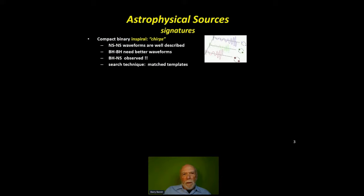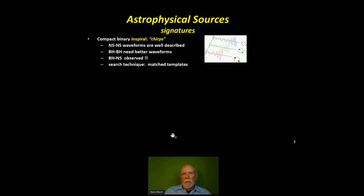I'm going to talk about the detection of gravitational waves from compact binaries. There are three possibilities: the merger of two neutron stars, the merger of a pair of black holes, or the merger of a black hole-neutron star pair. We have observed all three at this point, so I'll talk about all of them.